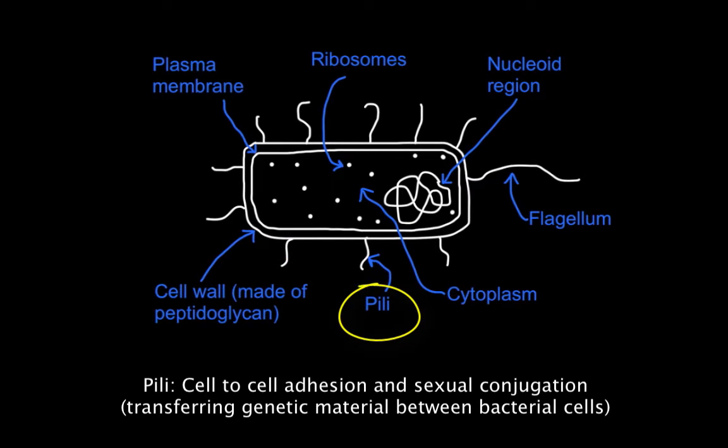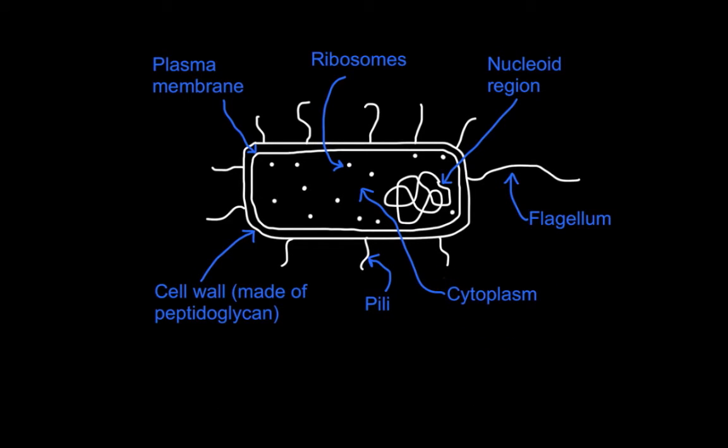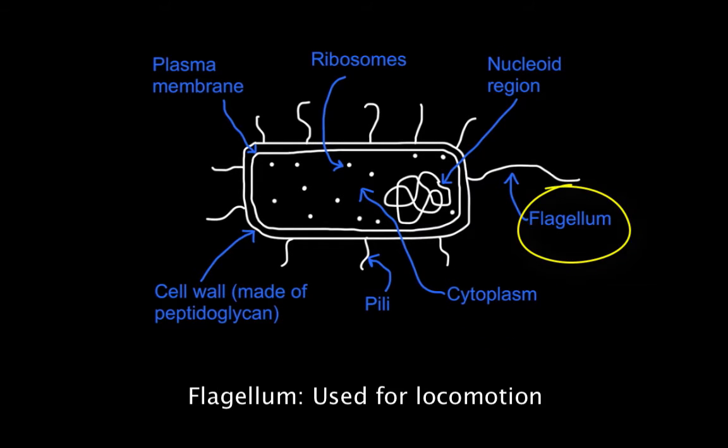Pilli are used for adhesion to other cells or sometimes for sexual conjugation. The cytoplasm is the liquid inside in which chemical reactions can take place. The flagellum is used for movement or locomotion.